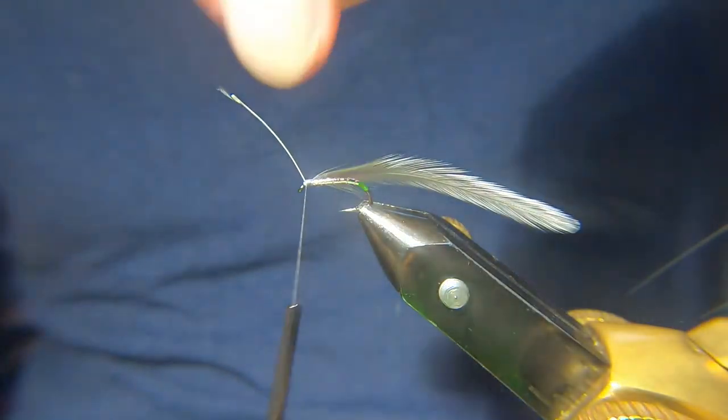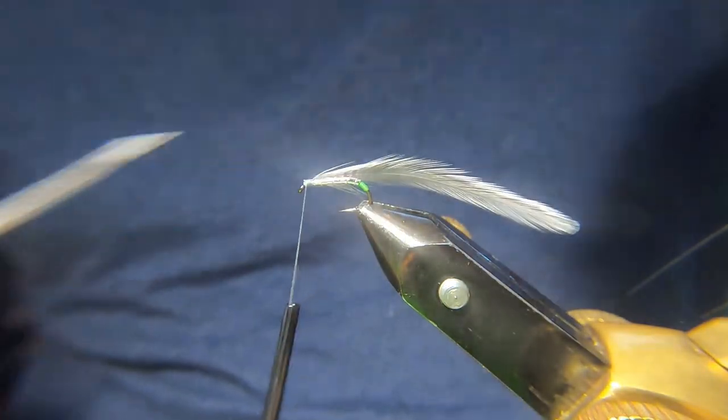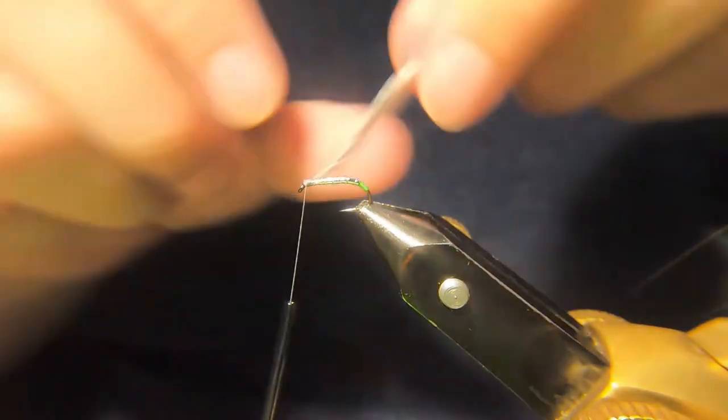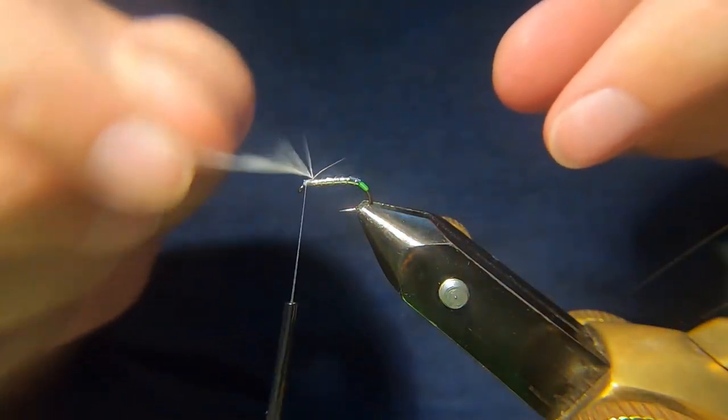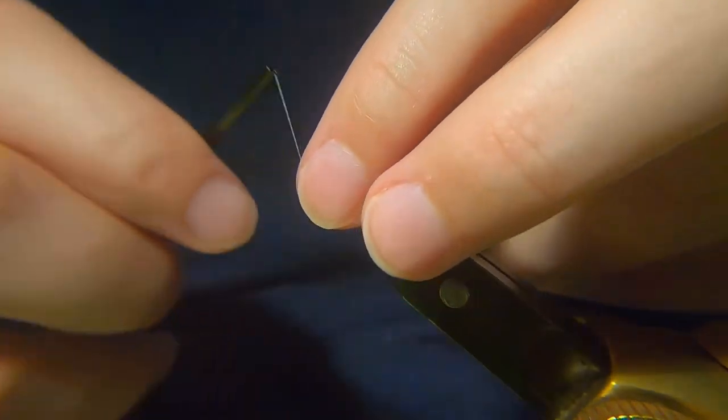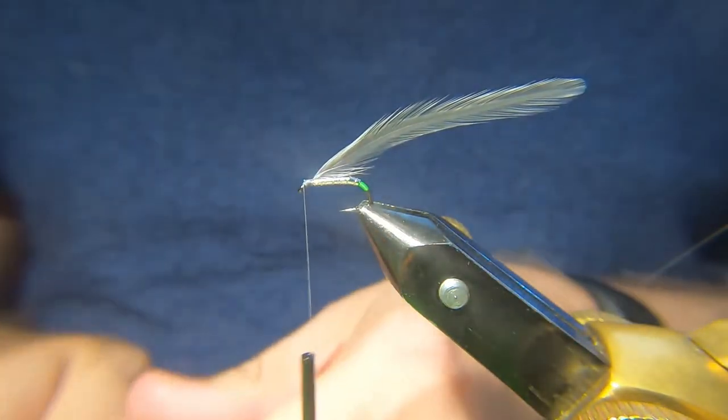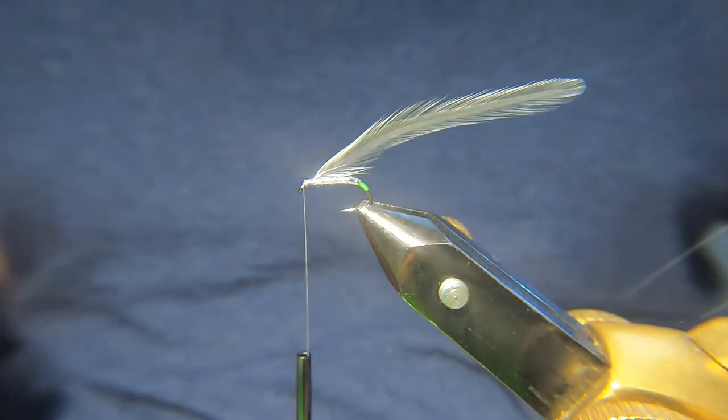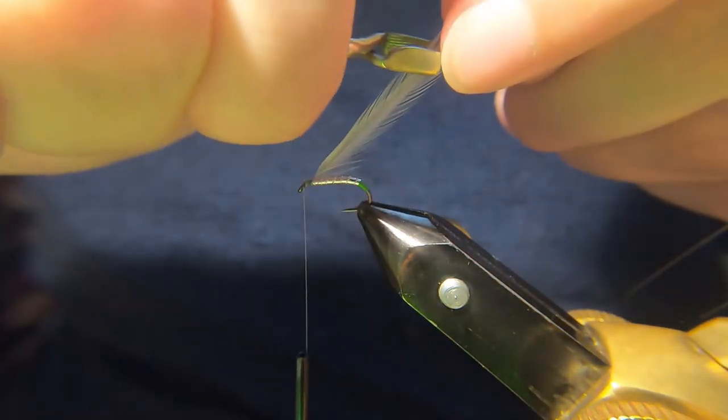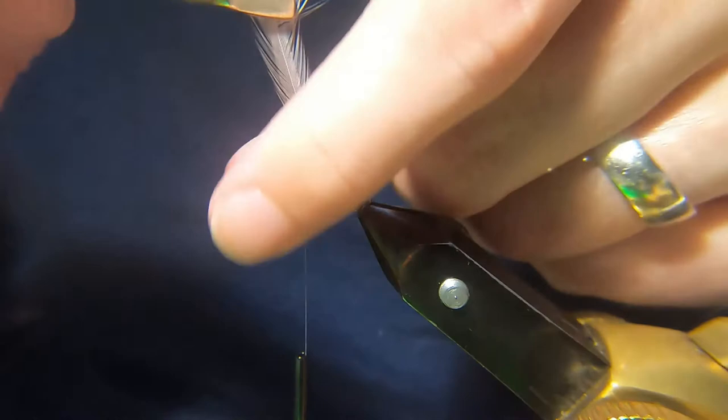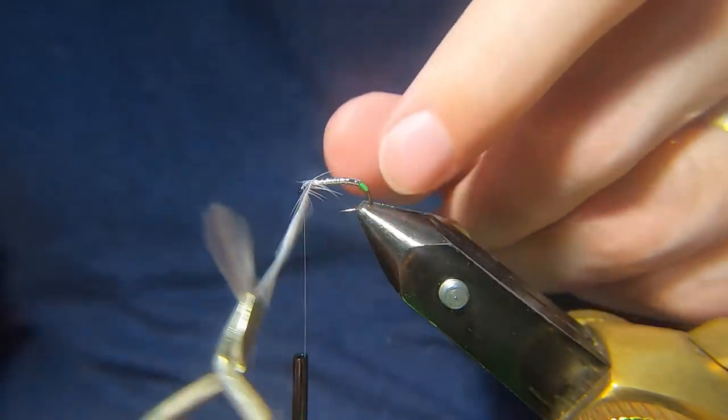Catch that in. Trim that away. Give it a wee bend up. Kink it inside. I'll leave my hackle pliers here. This is quite awkward because the camera is quite close to the vise. So I'll try not to hit it.